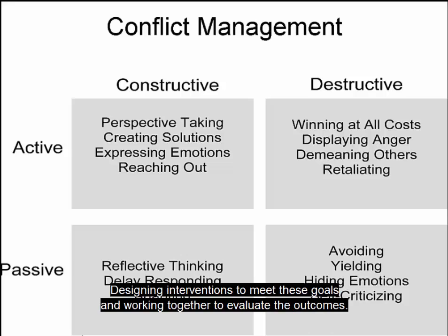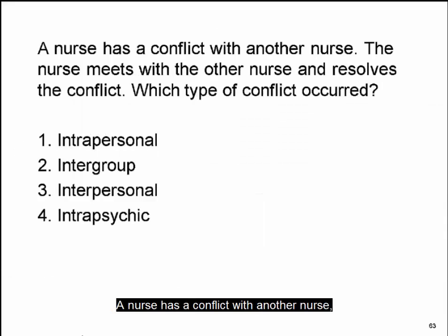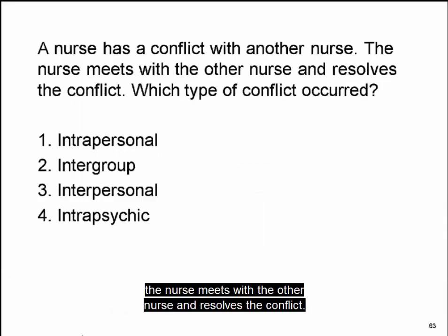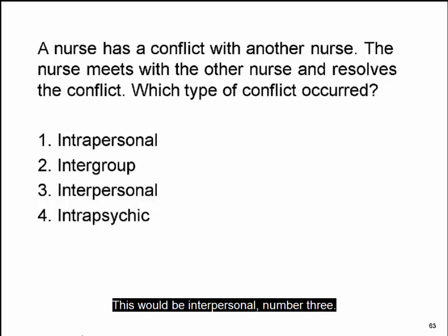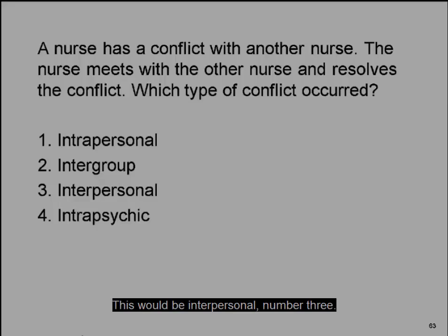Win-win resolution is a collaborative method where two opposing parties come together to decide on mutual goals, designing interventions to meet these goals and working together to evaluate the outcomes. For example, a nurse has a conflict with another nurse, the nurse meets with the other nurse and resolves the conflict — this would be an interpersonal conflict.